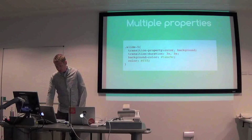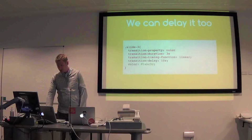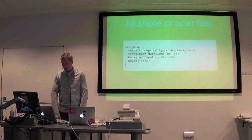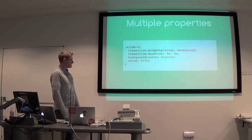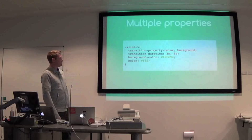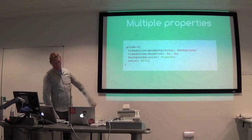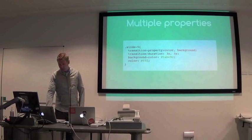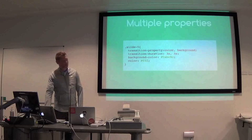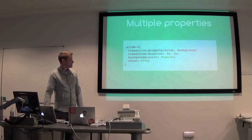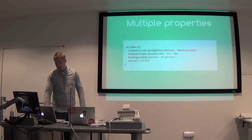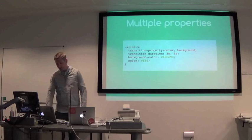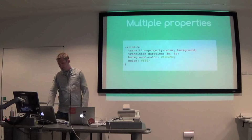You can do multiple properties. So you've got background and foreground color changing here with the same syntax — split them up with a comma-separated list of properties and a comma-separated list of durations which match them. So that's both the background and foreground color changing.